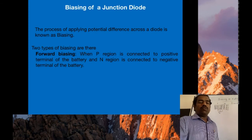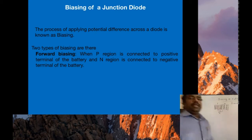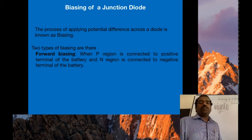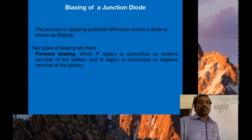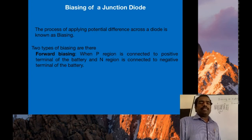In forward biasing, if you apply the positive terminal of the battery to the P region, the P region is connected to the positive terminal of the battery and the N region is connected to the negative terminal of the battery.